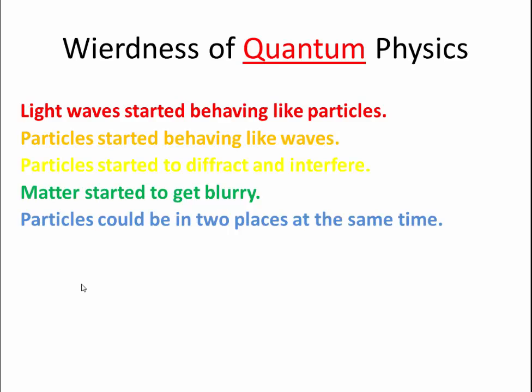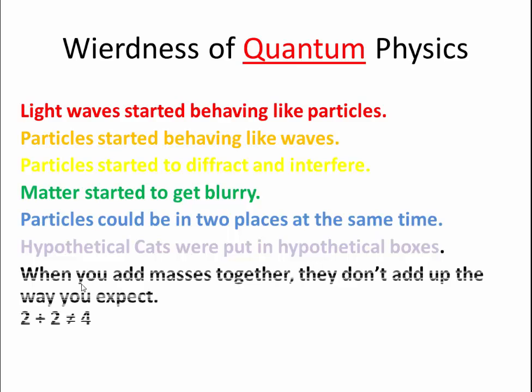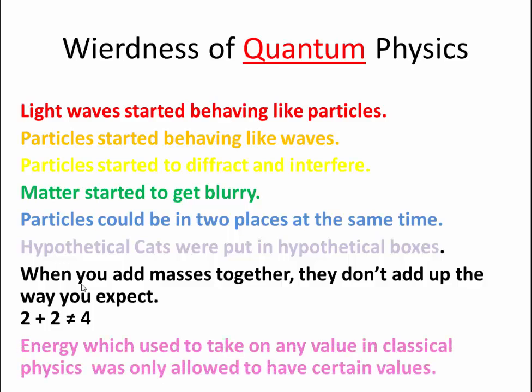Also, particles can be in two places at the same time. Also, cats will be put in hypothetical boxes and may be killed. Another thing, when you add masses together on a quantum level, they don't add up the way you expect. In other words, two plus two does not equal four. Energy, which used to take on any value in classical physics, was only allowed to have certain values. In other words, it's quantized. So, this is an example of some of the weirdness that is to follow.